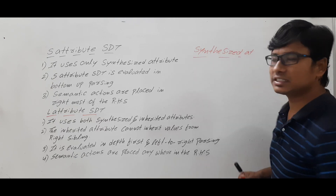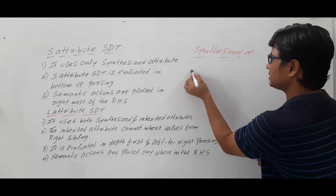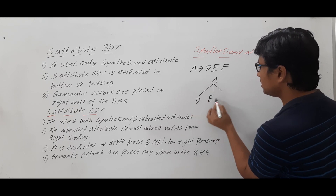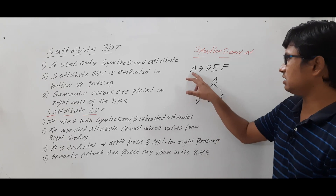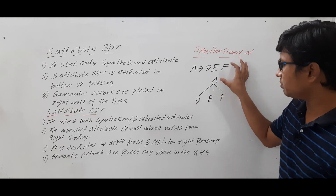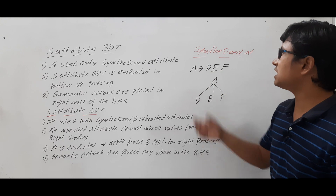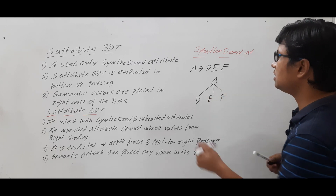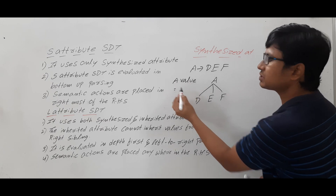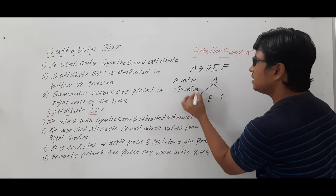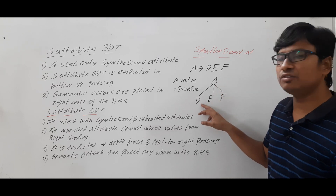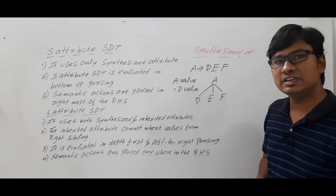What is meant by synthesized attribute? Suppose you have a production A → DEF. When you convert it into a tree, from A we derive D, E, F. Now, when can I call it a synthesized attribute? If the parent node takes the value from the child node — meaning A.value = D.value — then DEF are the child nodes and A is the parent node. If the parent node takes the value from the child node, we call such attributes synthesized attributes.